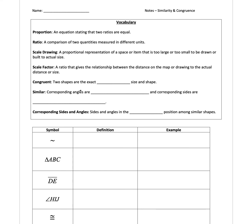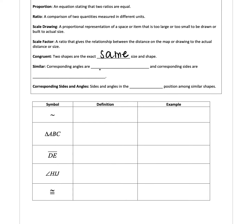We have a few new vocabulary words today. Congruent means two shapes that are the exact same shape and size — they'll be equal. Similar shapes are shapes that have corresponding angles which are congruent, so the angle measures will be the same, and the corresponding sides will be proportional. That's where we'll be using proportions again to find missing side lengths in similar shapes.